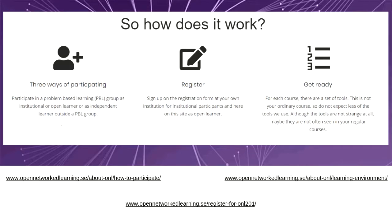The third way of participating is as an independent learner. If you don't want to commit to a PBL group — which requires one to two live sessions each week, coordinating with other participants and putting in six to eight hours — you can participate independently. We advise you to set up your blog, connect it, and connect through the live sessions, webinars, or tweet chats. You register either as an institutional learner at your partner university, through a registration form, or if you're an independent learner, you don't need to register at all.